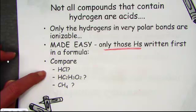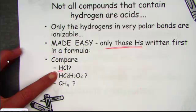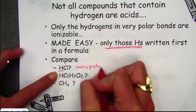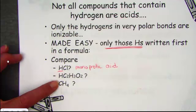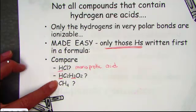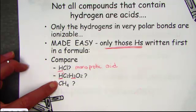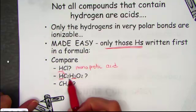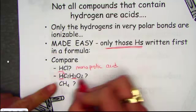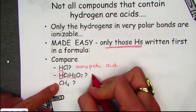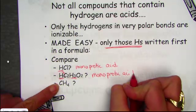For example, look at HCl — that hydrogen written first makes this a monoprotic acid that will release one hydrogen ion. Here's acetic acid, which actually has four hydrogens. Only one of those is an ionizable proton; the ones buried later do not dissociate to affect pH. Acetic acid, or hydrogen acetate, is a monoprotic acid. Even though there are four H's, only one is considered an acid proton.